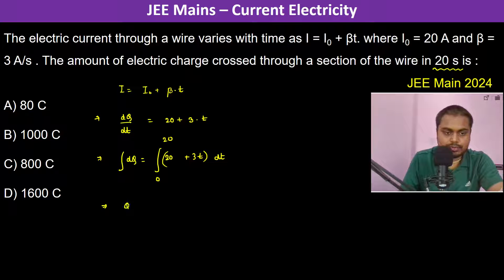Delta Q, which is passed, becomes 20T plus 3T square upon 2, from 0 to 20.